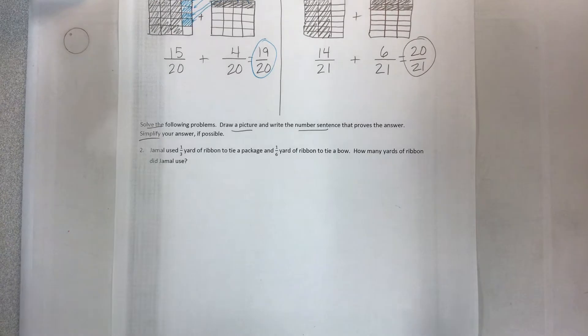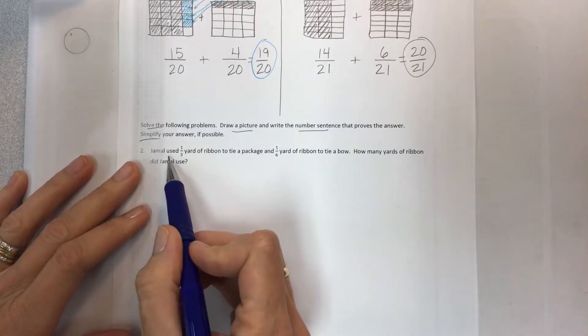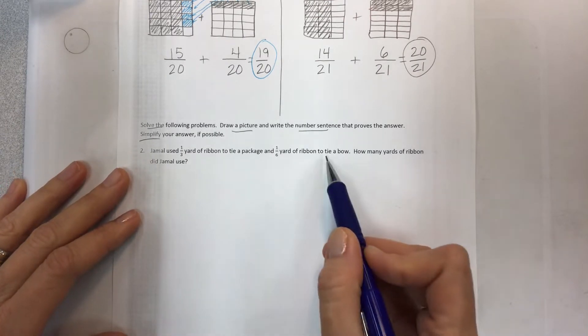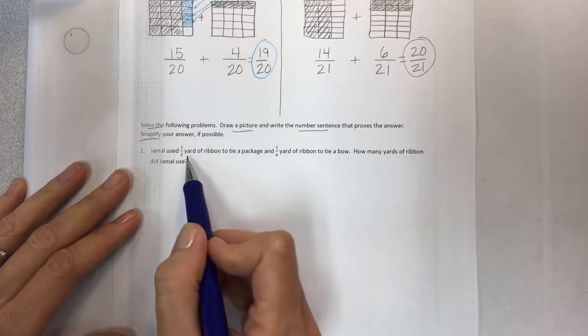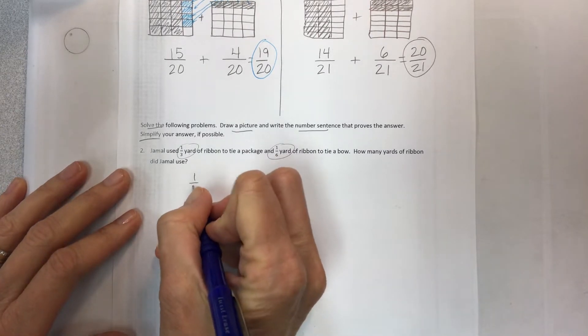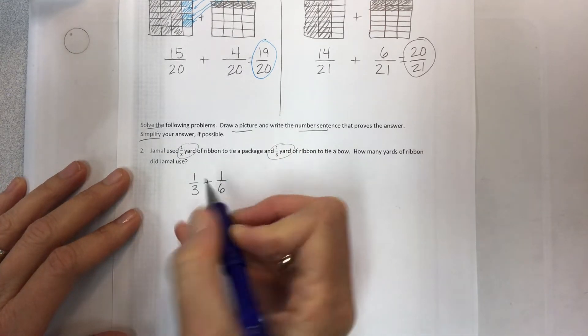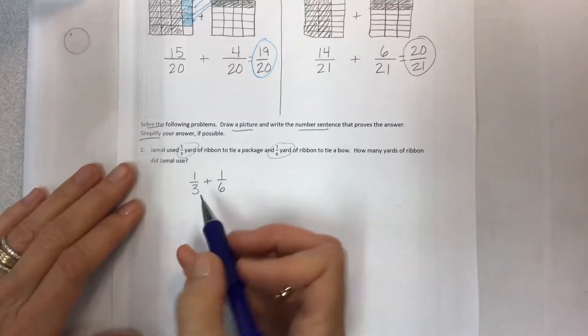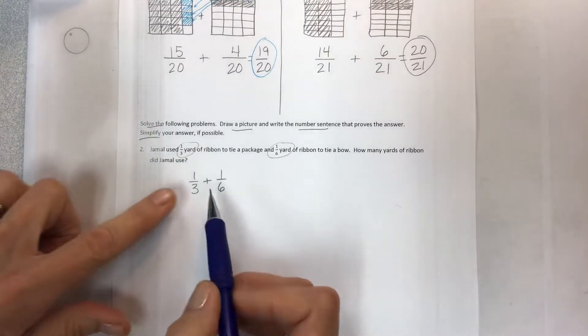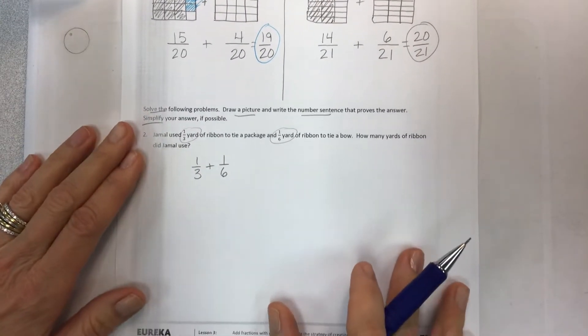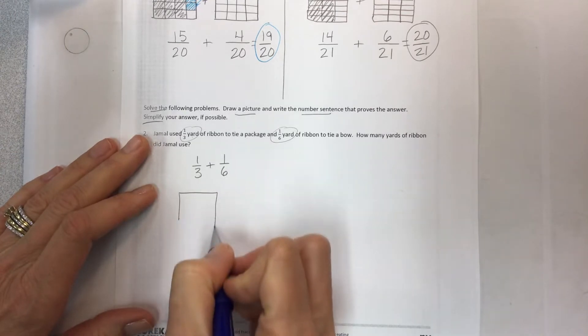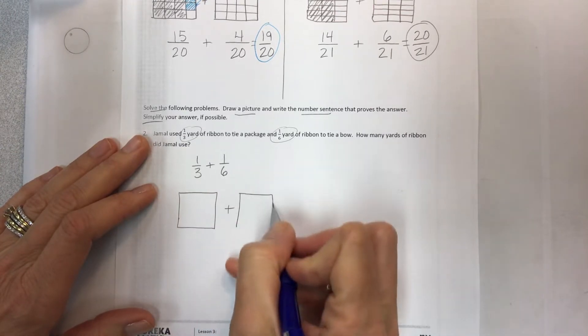Jamal used 1/3 yard of ribbon to tie a package and 1/6 yard of ribbon to tie a bow. How many yards of ribbon did Jamal use? We've got some here and some here. Thank goodness they're both in yards. Let's take our 1/3 and combine it with the 1/6. When you combine you're using addition. Notice that we don't have like units, so that's your first clue. When you're doing these problems on your own, you have to think about is this the same, because I cannot proceed until they are the same.